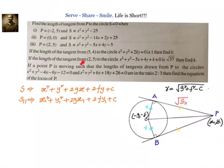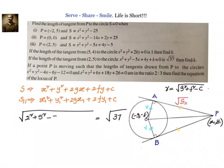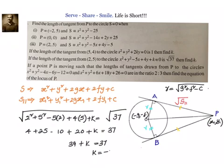Next problem: if the length of the tangent from (2, 5) to the circle x² + y² − 5x + 4y + k = 0 is √37, find k. Substituting (2, 5): 2² + 5² − 5(2) + 4(5) + k = 37. That gives 4 + 25 − 10 + 20 + k = 37, so 39 + k = 37, giving k = −2.